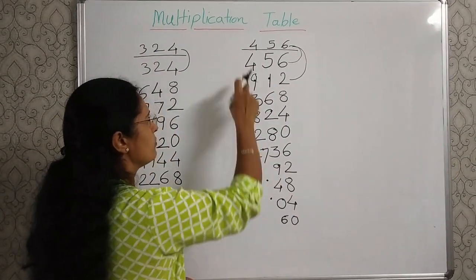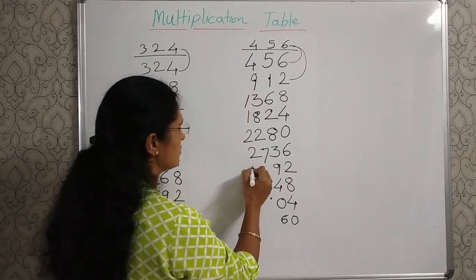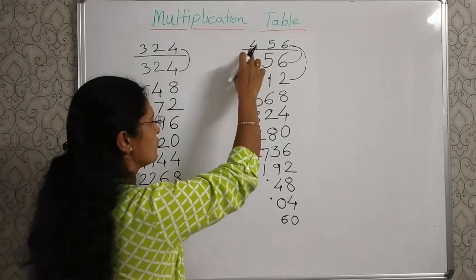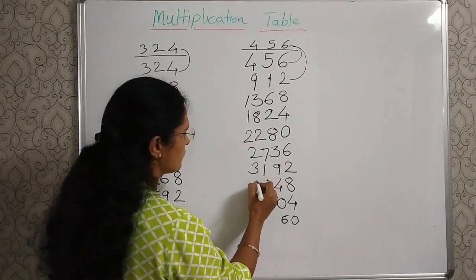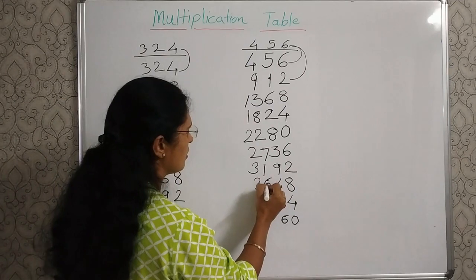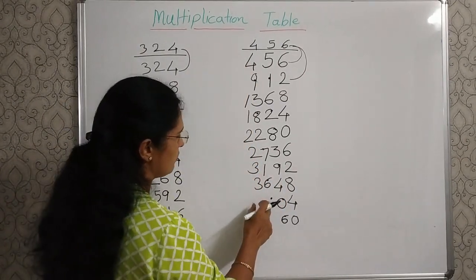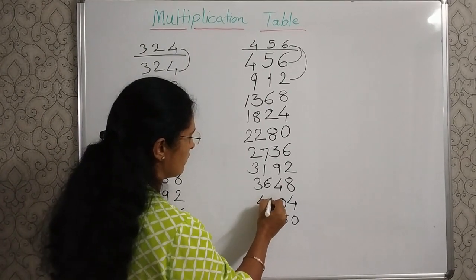27 plus 4, 31. So write complete 31 here. Now 31 plus 4, 35, and this one, 36. 36 plus 4, 40, plus 1, 41.